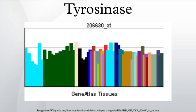Tyrosinase is an oxidase that is the rate-limiting enzyme for controlling the production of melanin. It is mainly involved in two distinct reactions of melanin synthesis: firstly, the hydroxylation of a monophenol, and secondly, the conversion of an o-diphenol to the corresponding o-quinone. O-quinone undergoes several reactions to eventually form melanin.